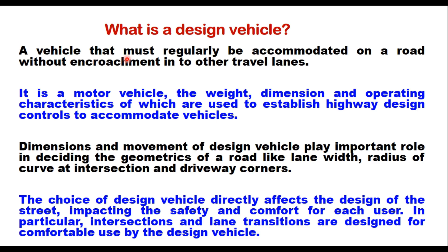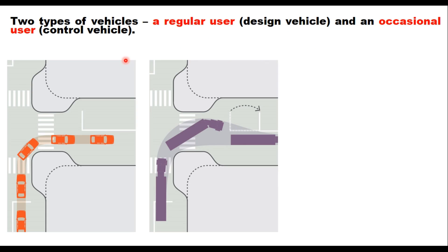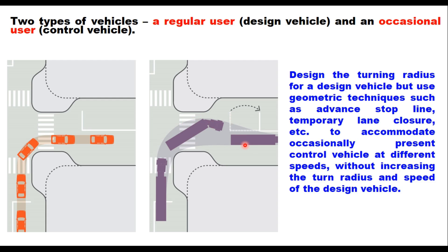In this definition, there are two types of vehicles: one vehicle which is regularly using the road, and another vehicle which will be occasionally using the road. For example, at an intersection, the design vehicle is the regular user of the road for which the radius of the curve is provided for a right turn. But there is an occasional user, which is called the control vehicle. We should accommodate this vehicle also, and one way is to shift the stop line so that it can encroach into other lanes to make a comfortable turn. So design the turning radius for the design vehicle, but use geometric techniques such as advanced stop line and temporary lane closure to accommodate the occasionally present control vehicle at different speeds, without increasing the turn radius and speed of the design vehicle.